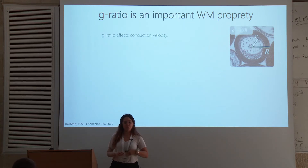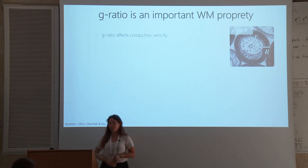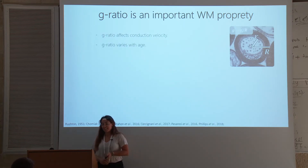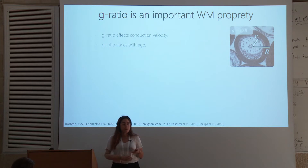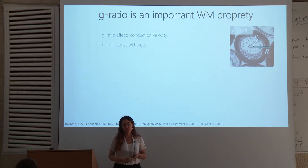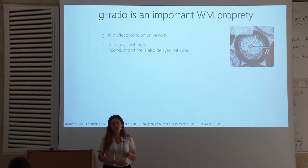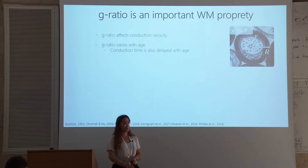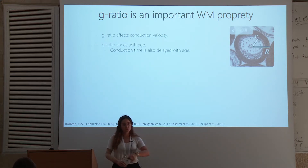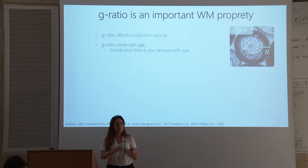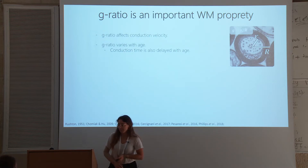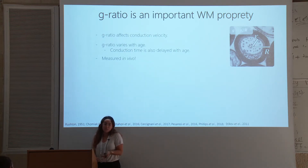It's already a good start if you want to say something about conduction. Second, g-ratio has been shown to vary with age, and conduction was also suggested to slow with age, so the results support each other. And finally, and maybe most importantly, we can measure it in vivo.